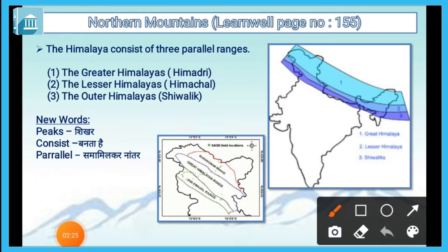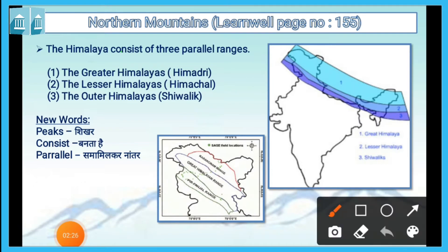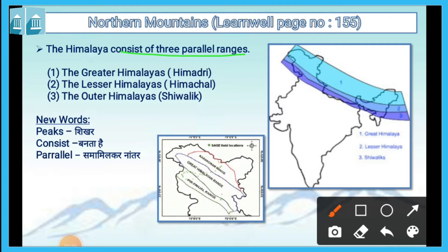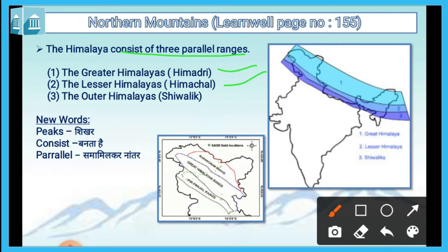The Himalayas range in India stretches from Jammu Kashmir in the north to Arunachal Pradesh in the north east. The Himalayas consists of three parallel ranges: the Greater Himalayas (Himadri Range), the Lesser Himalayas (Himachal), and the Outer Himalayas (Shivalik).